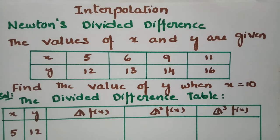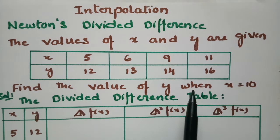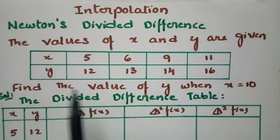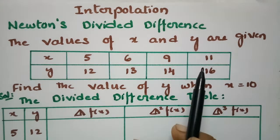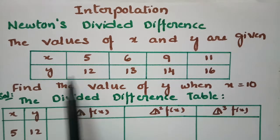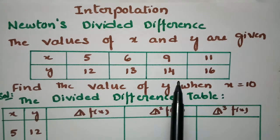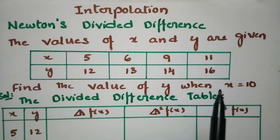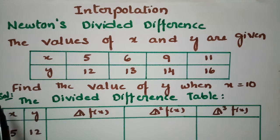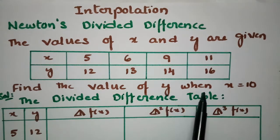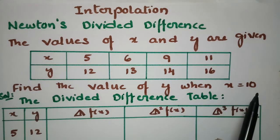Today's video I am going to solve a problem using Newton divided difference. We have to find the values of x as well as y. The given x values are 5, 6, 9, 11, whereas the corresponding y values are 12, 13, 14, and 16. We have to find the value of y when x is equal to 10.